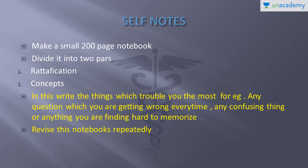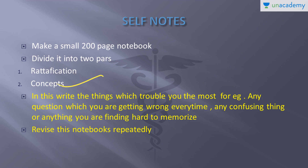There's a special strategy I used: take a small notebook — not A4 size or 200 pages long. Divide it into two parts: name the first part 'ratification' and the second part 'concepts.' Then find and search for the problems in your studies — the issues that biology has created for you.